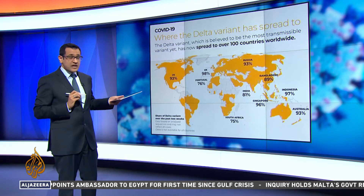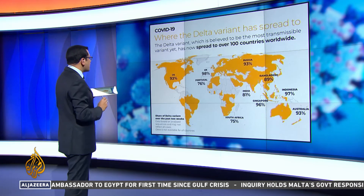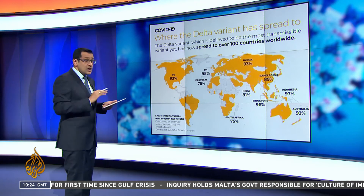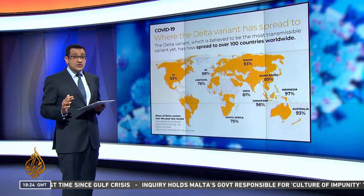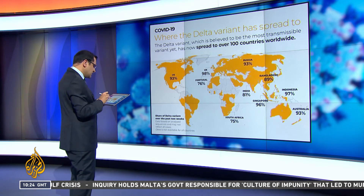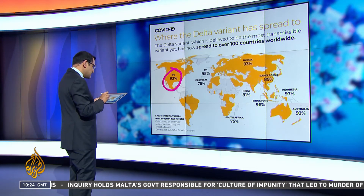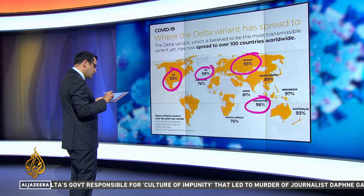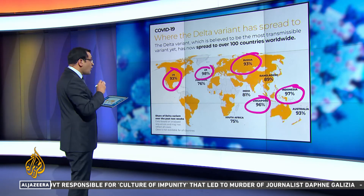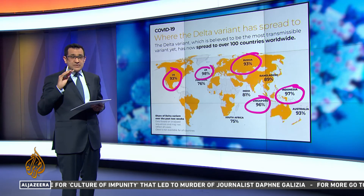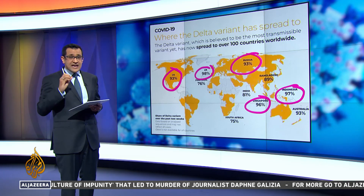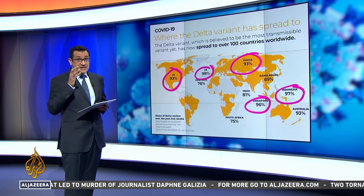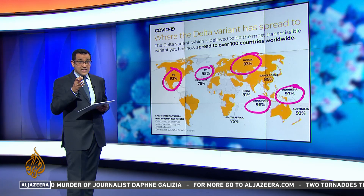This is from aljazeera.com — a map showing where the Delta variant has spread to. Over 100 countries, and in the last two weeks, the US, the UK, Russia, Singapore, Indonesia — all upwards of 90% of their new cases are Delta variant cases.